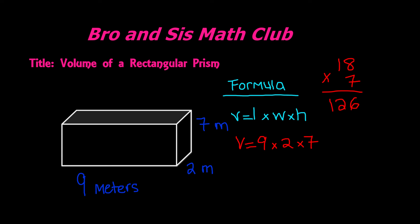So the volume of this rectangular prism is equal to 126 meters cubed.